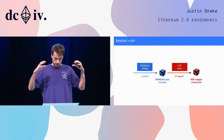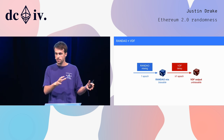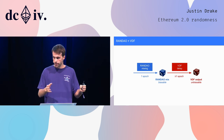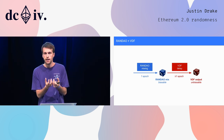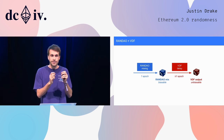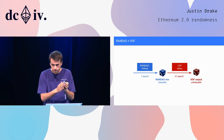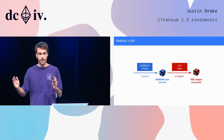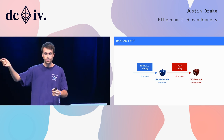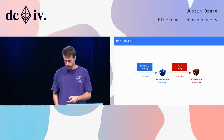This is the gist of the construction. We have two parts: the RANDAO mixing period, which is one epoch, producing a biasable RANDAO mix. You then feed the RANDAO mix into the VDF. The VDF takes time to compute — at least one epoch of guaranteed delay — and then on the other side, the output is your unbiasable randomness.